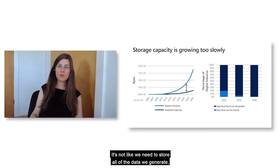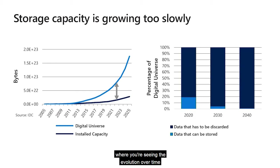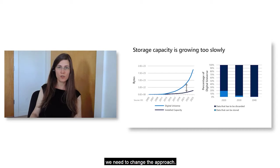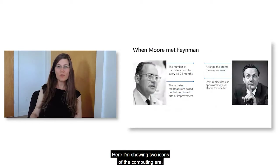It's not like we need to store all the data we generate, but we actually want to store a portion of it. The reason the gap is concerning is what I'm showing on the right-hand side, where you're seeing the evolution over time of the portion of data we'll be able to store out of all the data we generate if we simply follow this trend. We think that to put a dent on this problem, we need to change the approach.